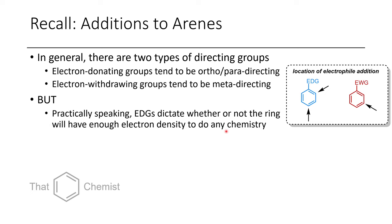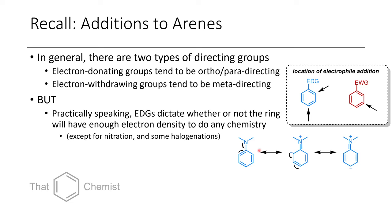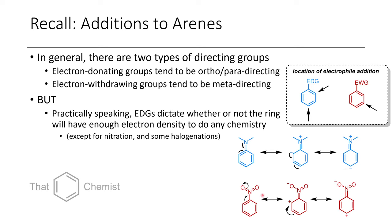It's worth remembering that we can rationalize this by looking at aniline, which puts a negative charge in the ortho or para position, explaining why it's easy for electrophiles to add there. If we look at nitrobenzene, a positive charge can be placed in the ortho and para positions, which is why an electrophile is not likely to add to those positions, giving electrophilic addition at the meta position relative to the nitro group.